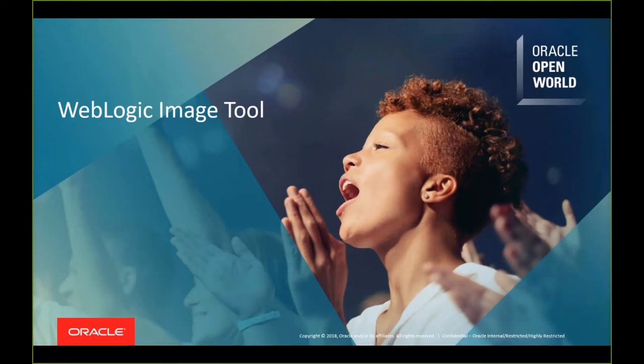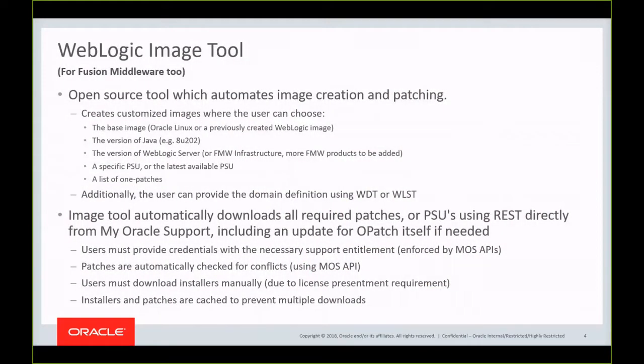In this video I'm going to give a short demonstration of the WebLogic image tool. It's a new open source tool to automate image creation and patching. It will allow users to create customized images where they can choose the base image — Oracle Linux or a previously created WebLogic image — the version of Java they want to use, and the version of WebLogic server or Fusion Middleware infrastructure. We're working on adding more Fusion Middleware products as well.